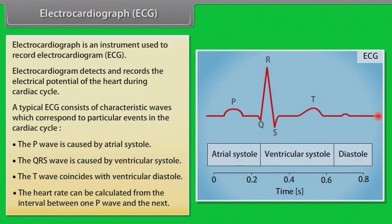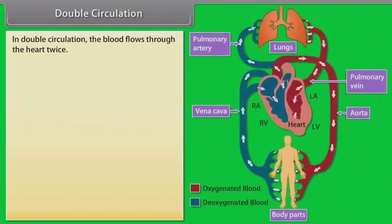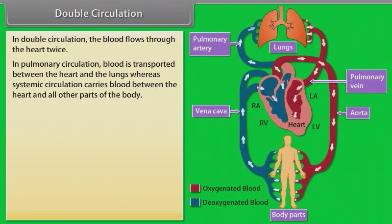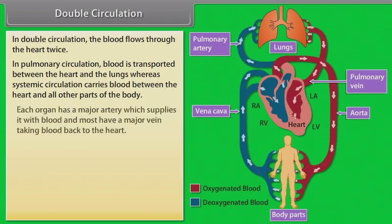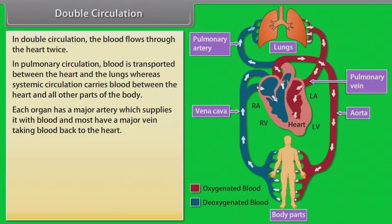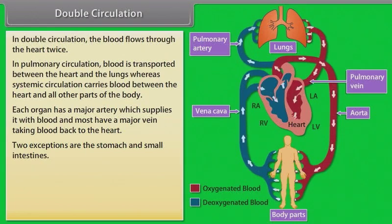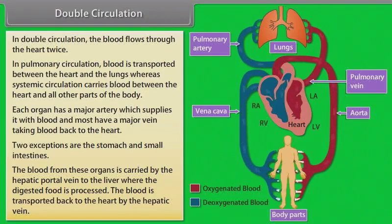Double circulation: In double circulation, the blood flows through the heart twice. In pulmonary circulation, blood is transported between the heart and the lungs. Systemic circulation carries blood between the heart and all other parts of the body. Each organ has a major artery which supplies it with blood, and most have a major vein taking blood back to the heart. Two exceptions are the stomach and small intestines — the blood from these organs is carried by the hepatic portal vein to the liver, where the digested food is processed. The blood is then transported back to the heart by the hepatic vein.